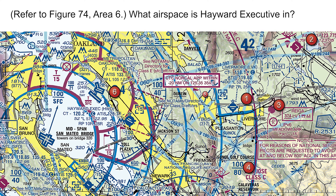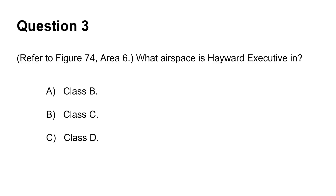Note that there is also Class E airspace denoted by the magenta dashed line, which also starts at the surface. However, this note says that this Class E airspace has certain effective hours, so it is not enforced 24x7 and is not part of the multiple choices, so we can rule it out. Because Class D airspace starts at the surface and is enforced 24x7, the answer is Class D.